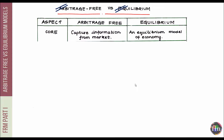An arbitrage-free model's main intent is to capture the information which the market serves to you. This information can be about how investors expect short-term rates to evolve with time, or about risk premiums which investors believe are embedded in the prices of long-term bonds compared to prices of short-term bonds. Whatever the source of this information is, the model believes that the information is important enough to be captured accurately inside the model.